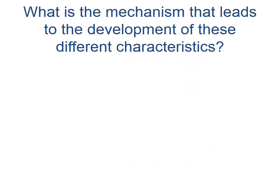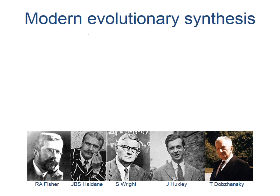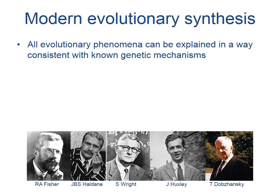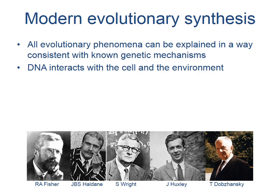All of these different changes happen over long periods of time. The question then is, what is the mechanism that leads to the development of these different characteristics that we observe in organisms today? According to the Modern Evolutionary Synthesis, all evolutionary phenomena can be explained in a way that is consistent with known genetic mechanisms.